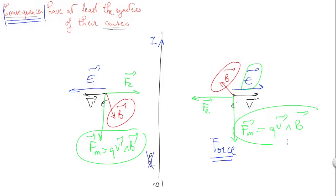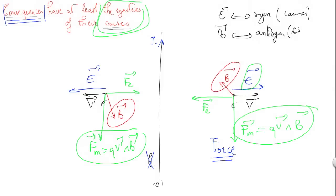From a practical point of view, we always say that E is symmetric with the symmetries of the causes, while B is anti-symmetric to what the symmetries of the causes are.